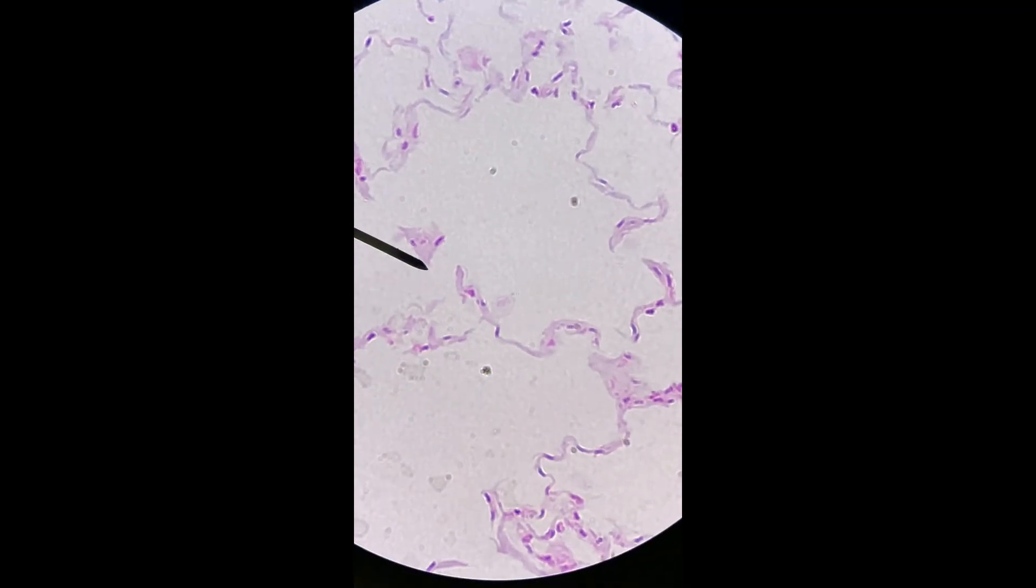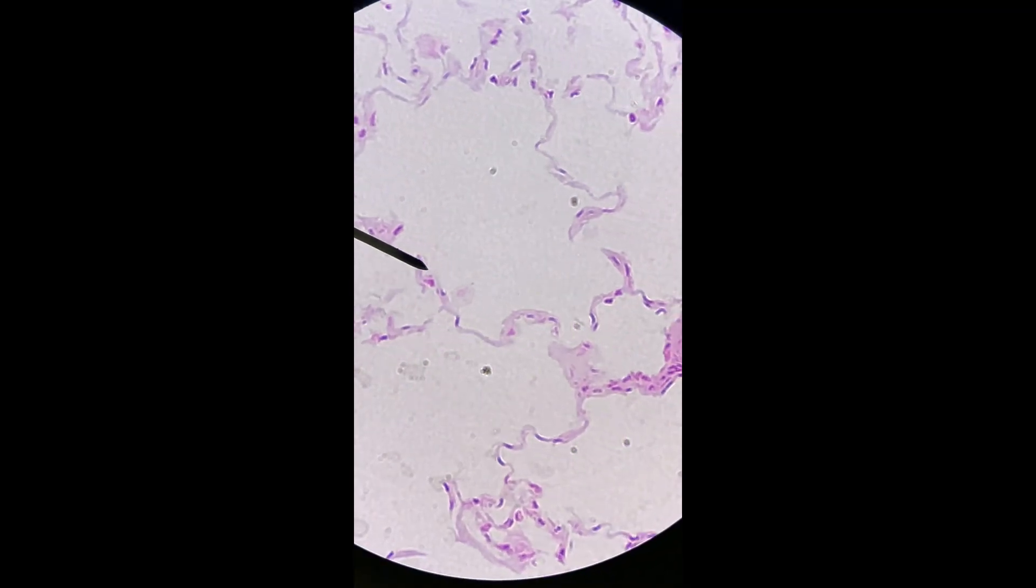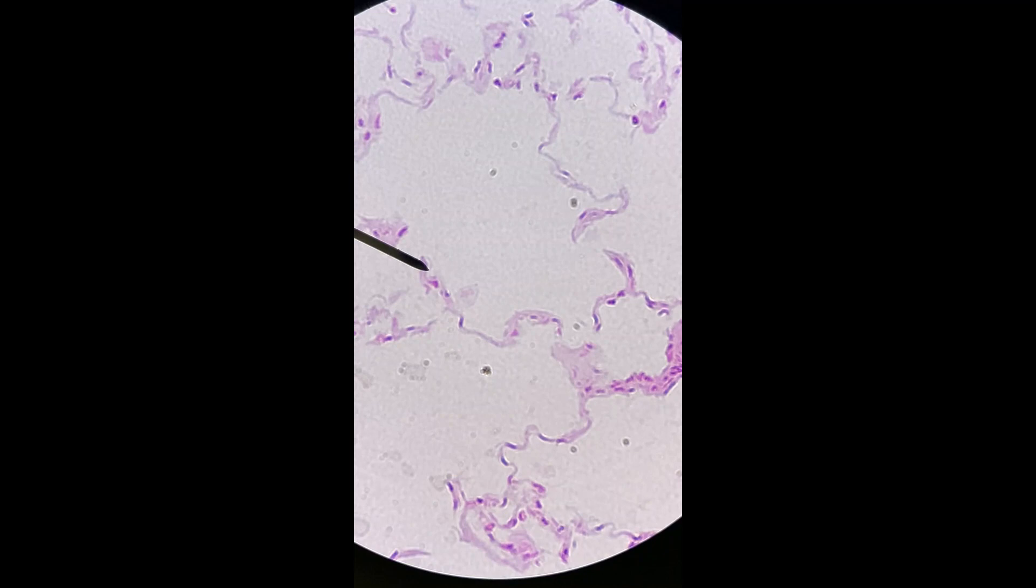And these cells right here that line it, where the pointer is, those are the simple squamous cells that make up the wall of that sac. So they're really thin. They allow oxygen to go across very easily.